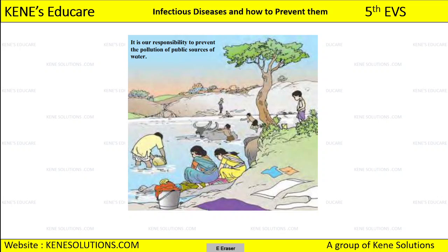We should stop doing this because it is our responsibility to prevent the pollution of public water sources. All public people use the water from this site. The private source of water is the tap in your house, while rivers, lakes, and ponds are public sources because all people residing near them use them.